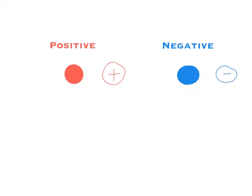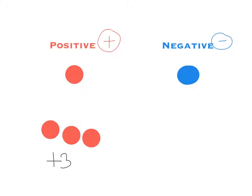So we use the counters in this way. If I have one, two, three red counters then that would mean I have positive three. If I had one, two, three, four blue counters that would mean I had negative four. That's how we use them.